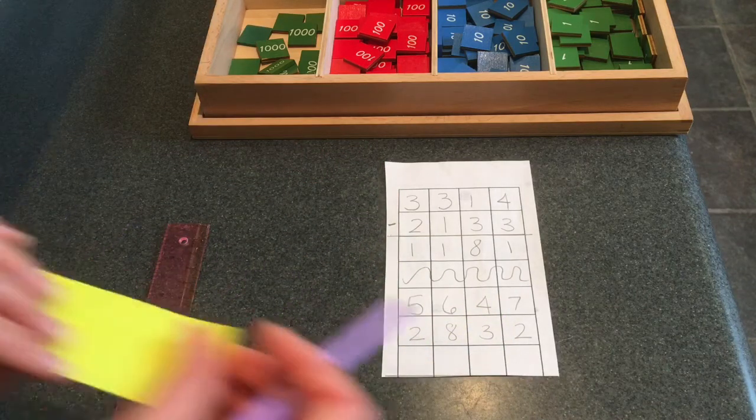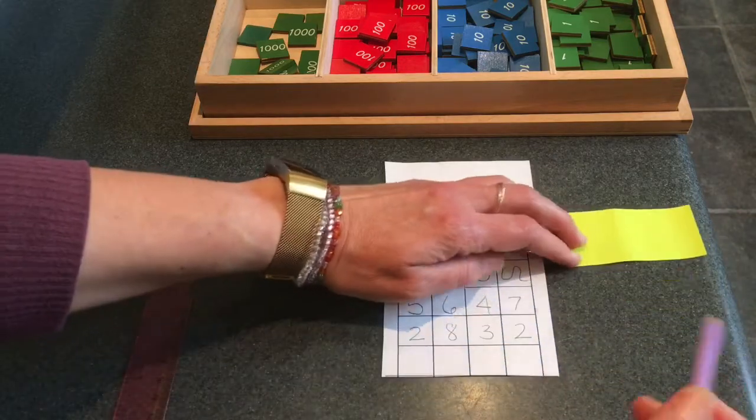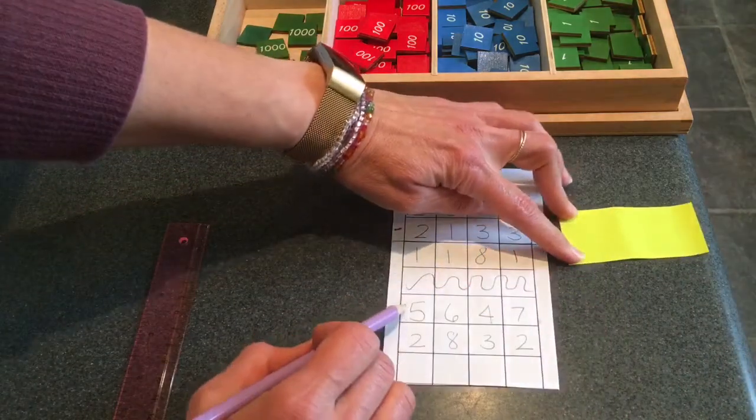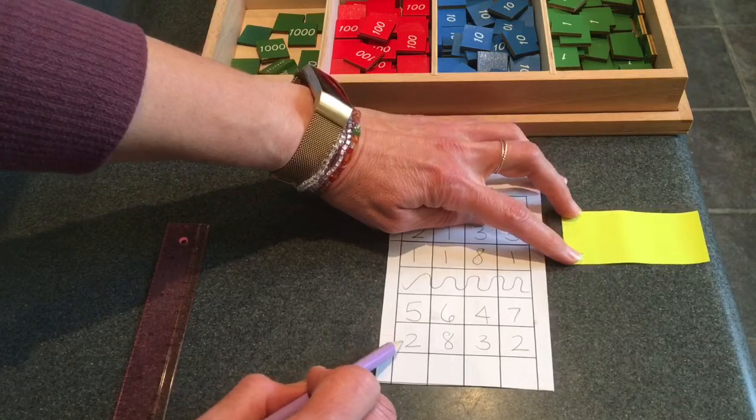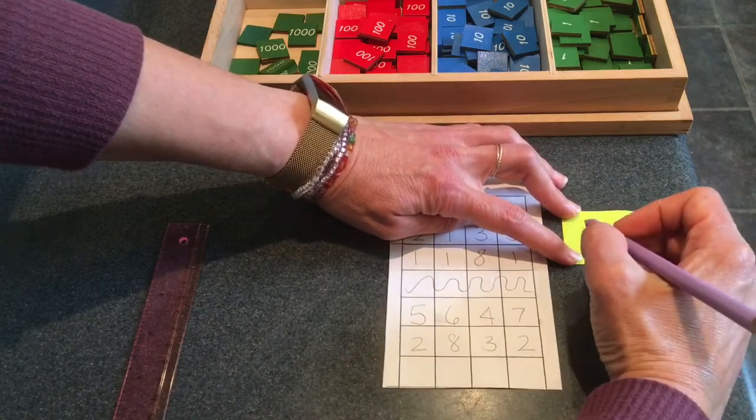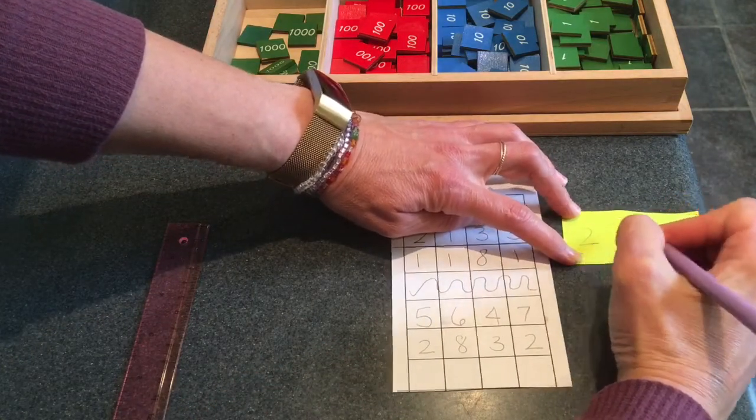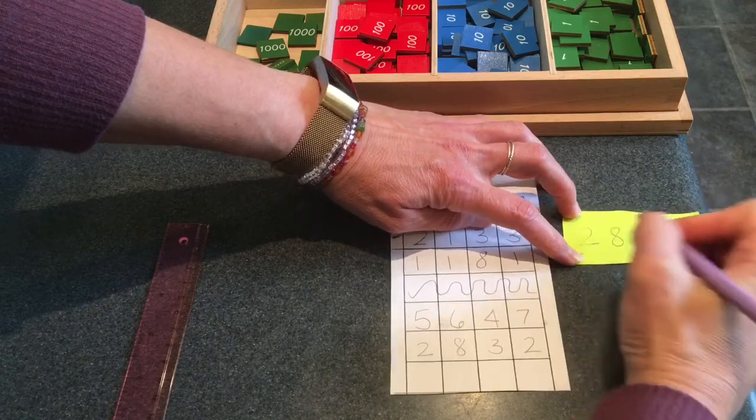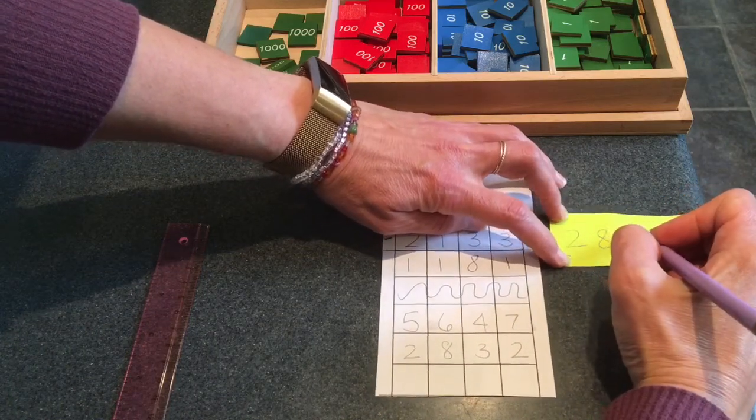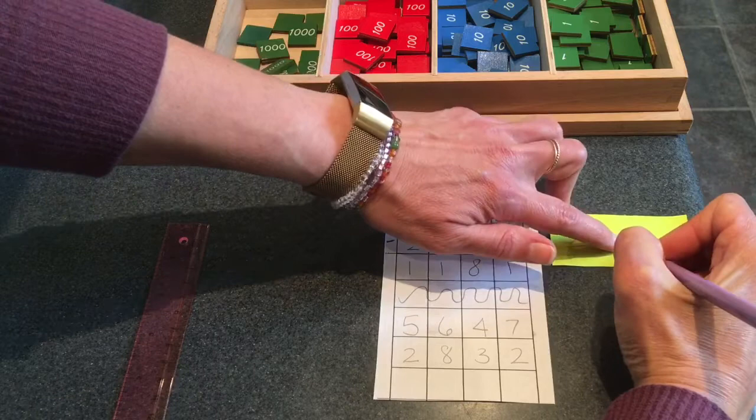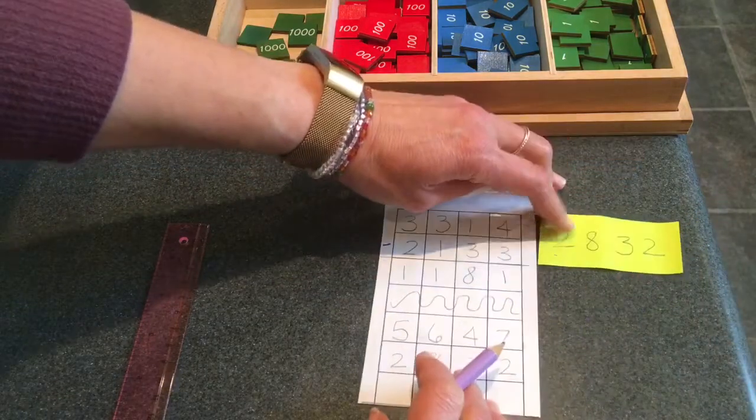And then underneath your half post-it, you can take away from the minuend and build the subtrahend, which is two thousand, eight hundreds, three tens, and two units.